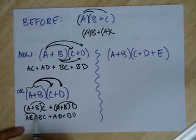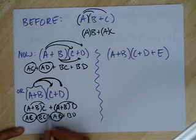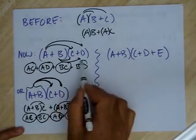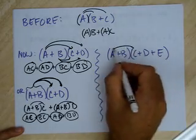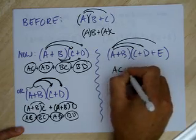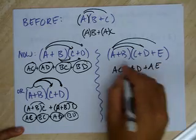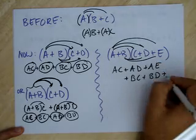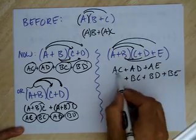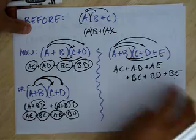Notice what I have: AC, AD, BC, BD — same thing. Now what happens if there are three terms in the second one? We just distribute A to all three: AC, AD, AE, then plus BC, plus BD, plus BE. And look — any like terms? No. That's okay. In the next one we start multiplying, there will be some like terms. We're just distributing things through.